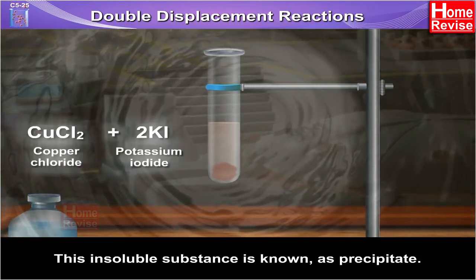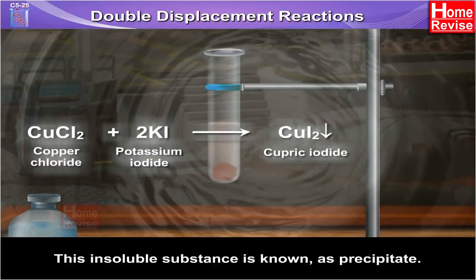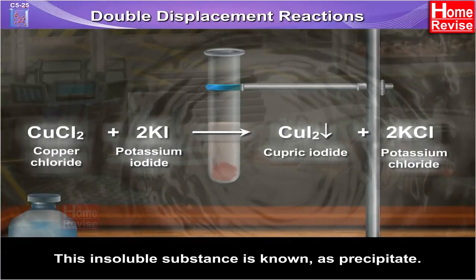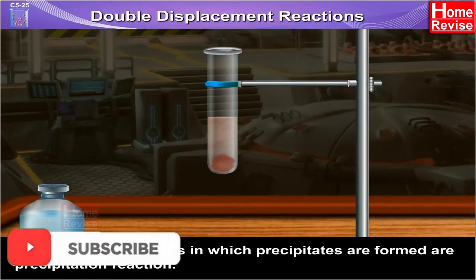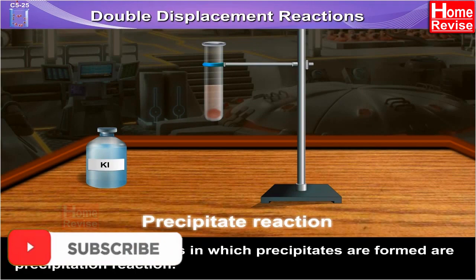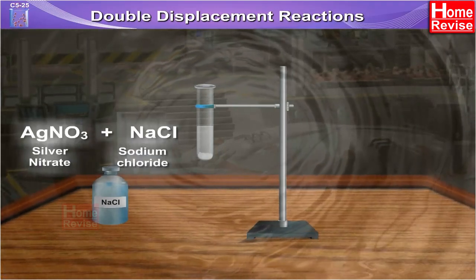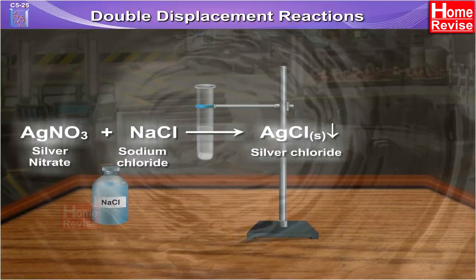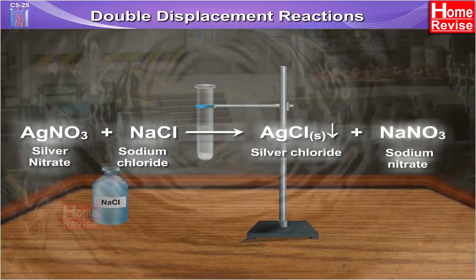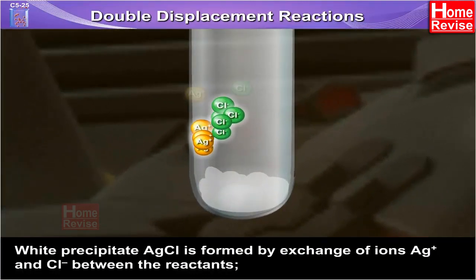A brown substance insoluble in water is formed. This insoluble substance is known as a precipitate. CuCl2 (copper chloride) + 2KI (potassium iodide) gives CuI2 precipitate (cupric iodide) + 2KCl (potassium chloride). Chemical reactions in which precipitates are formed are called precipitation reactions. AgNO3 (silver nitrate) + NaCl gives a white precipitate of AgCl, formed by exchange of ions Ag+ and Cl- between the reactants.